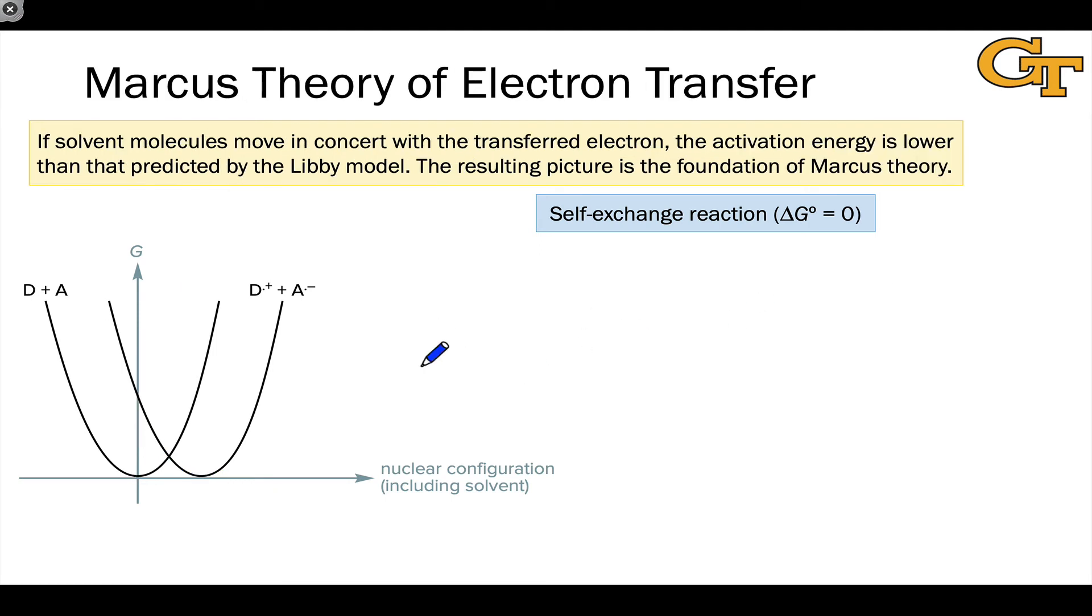But the Marcus model has an entirely different hypothesis about the activation energy. Marcus noticed that if we start here at the equilibrium position in the D plus A surface, we don't have to go immediately up to the D dot plus and A dot minus surface.